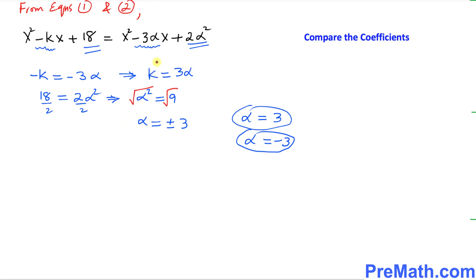Since we want to find the k value, I'm going to say first at alpha equals to three, we know that k equals to three alpha. So just fill in the blanks. So k equals three times three. So k turns out to be simply nine.